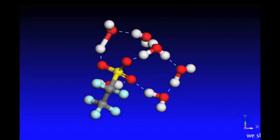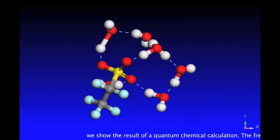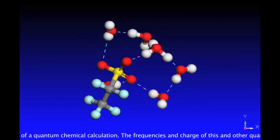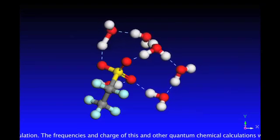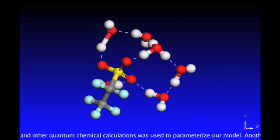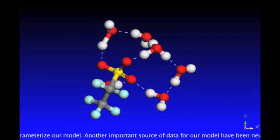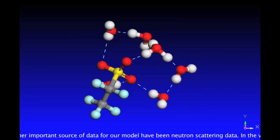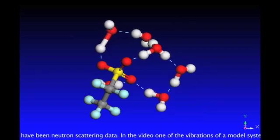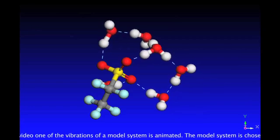In the first video we show the result of a quantum chemical calculation. The frequencies and charges of these and other quantum chemical calculations were used to parametrize our model. Another important source of data for our model has been neutron scattering data. In the video, one of the vibrations of a model system is animated.